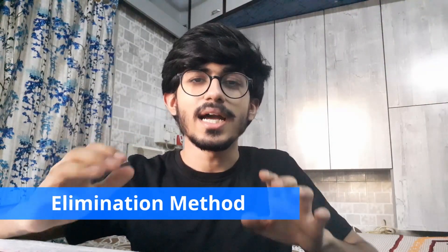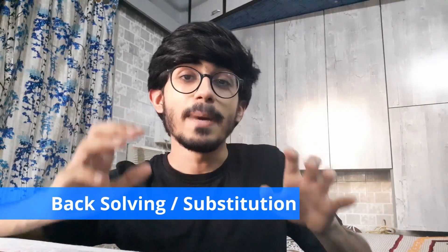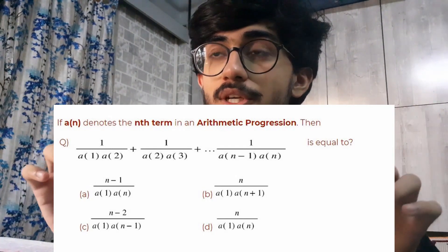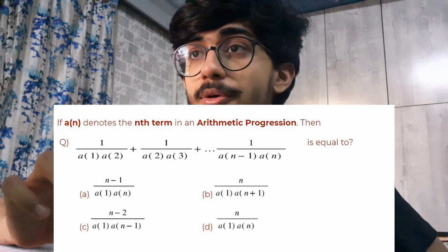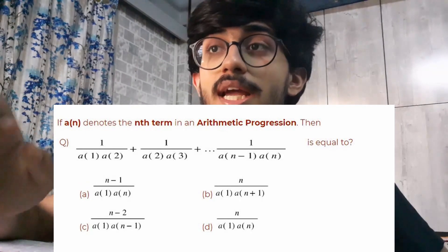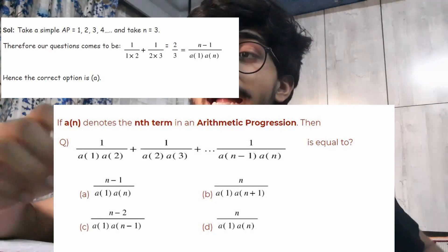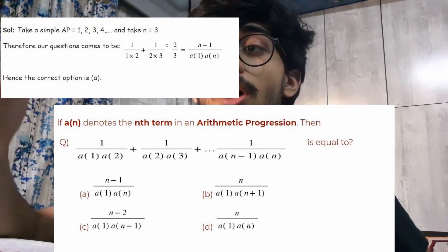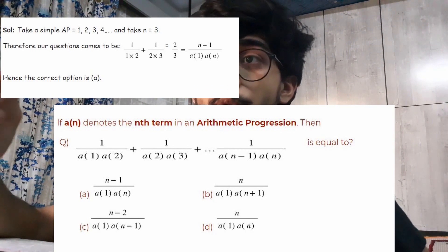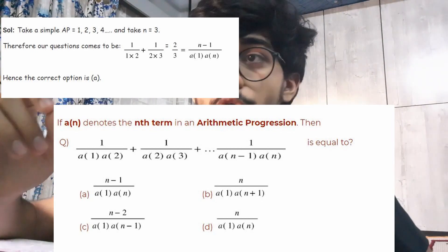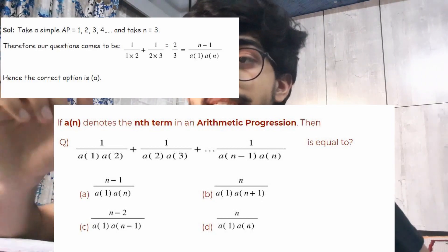The next method is the Elimination method — removing all the options that can never be correct and coming down to only one option. Next is the Backsolving or Substitution method. In this method, you substitute your preferred values in the given question and then match it with the options. For example, we can assume an arithmetic progression of 1, 2, 3, 4 and take n equal to 3. The question then comes down to 1/2 plus 1/(2×3), that is 2/3. This can only be achieved using the values in the first option, and that is why the first option is our correct answer.